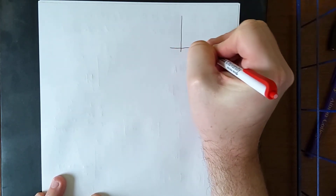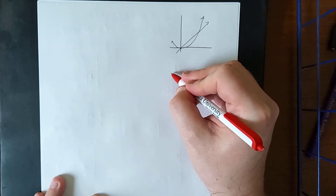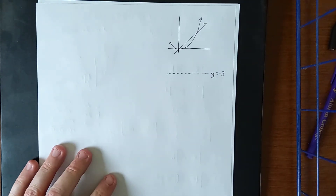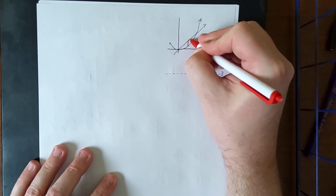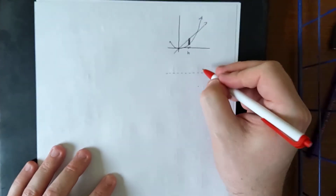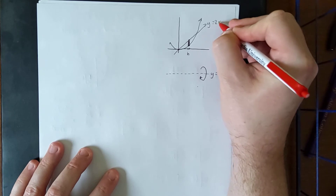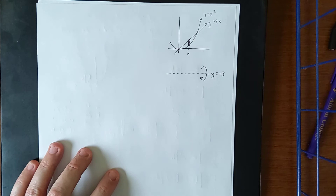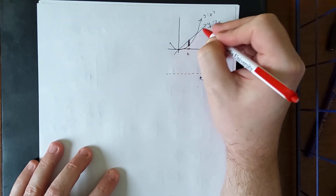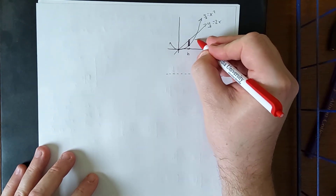The setup looks a little different. We have the parabola, the line, and the axis of rotation all the way down at y equals negative 3. Drawing a sample rectangle, because this is a horizontal axis we see a small change in x as the height dx of the washer. The top function y equals 2x is labeled y1, the bottom function y equals x squared is labeled y2, and the axis of rotation is y3 equals negative 3.